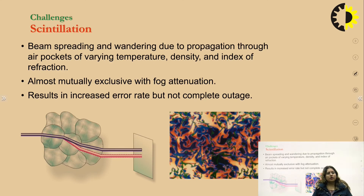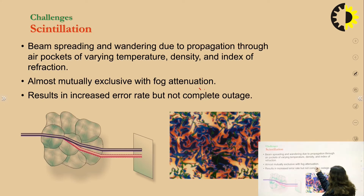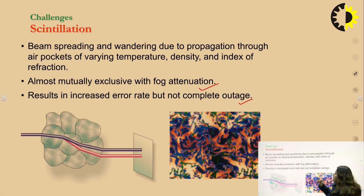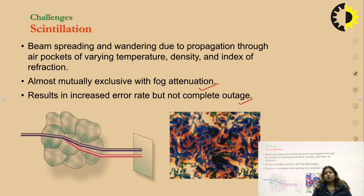The next challenge is scintillation, which is basically beam spreading or wandering due to propagation through air pockets of varying temperature, density, and index of refraction. Unlike fog attenuation, scintillation results in increased error rate but not a complete outage — some light still reaches the receiver, rather than a complete signal loss as with fog, rain, or snow.